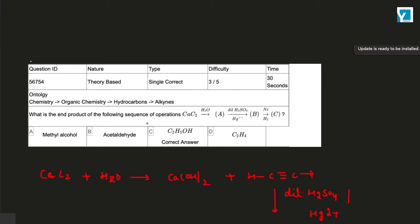What is the end product of the following sequence? Starting with calcium carbide, we react with calcium hydroxide and acetylene is produced.